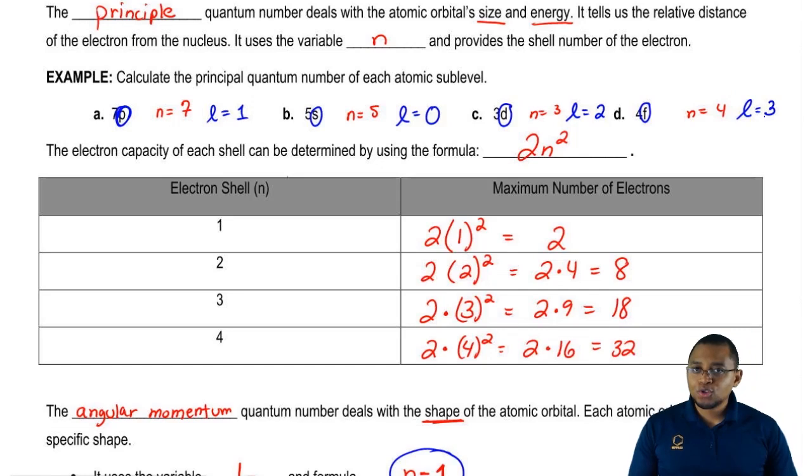So far, we know the first two quantum numbers. Now it's time to take a look at the third one.